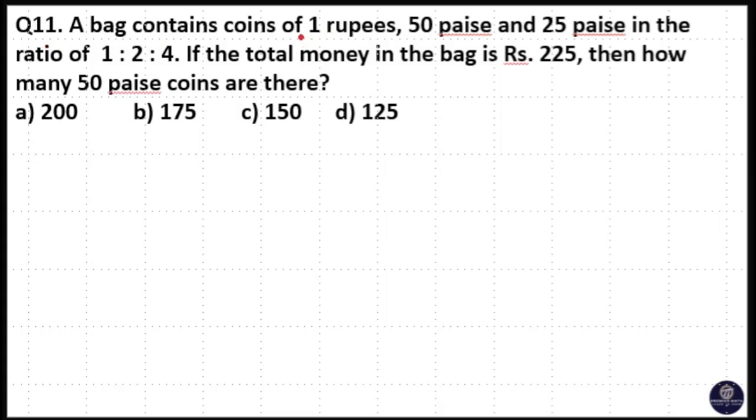The bag contains coins of 1 rupee, 50 paise and 25 paise in the ratio of 1 to 2 to 4. If the total money in the bag is Rs. 225, then how many 50 paise coins are there?